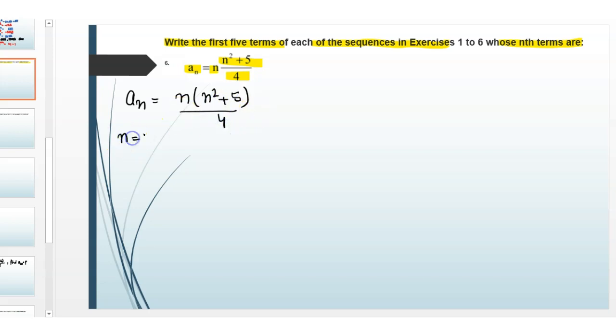First, we put n equals 1, then we get a1 = 1(1² + 5)/4. Then for a2, put n equals 2, so a2 = 2(2² + 5)/4.